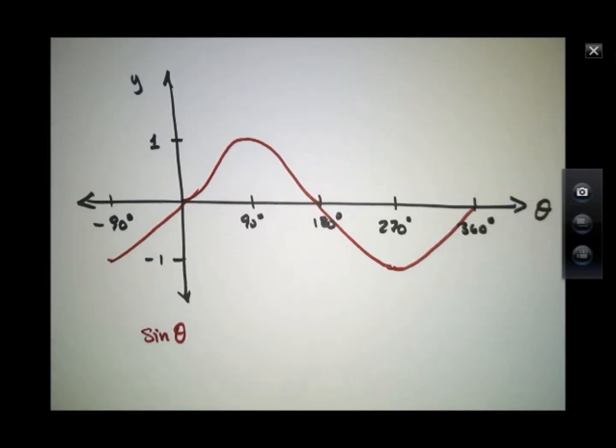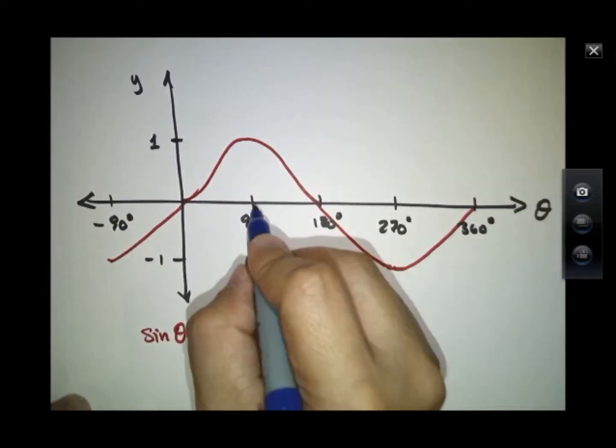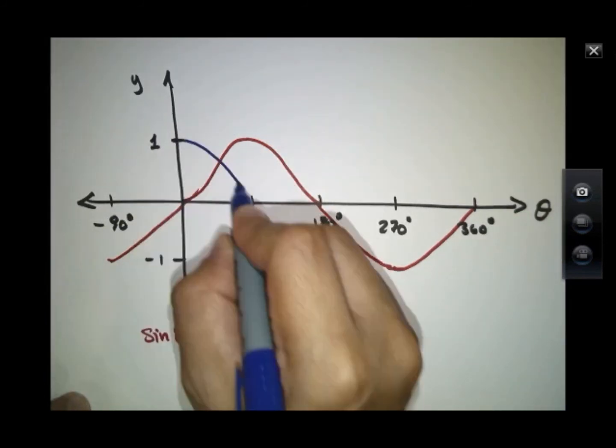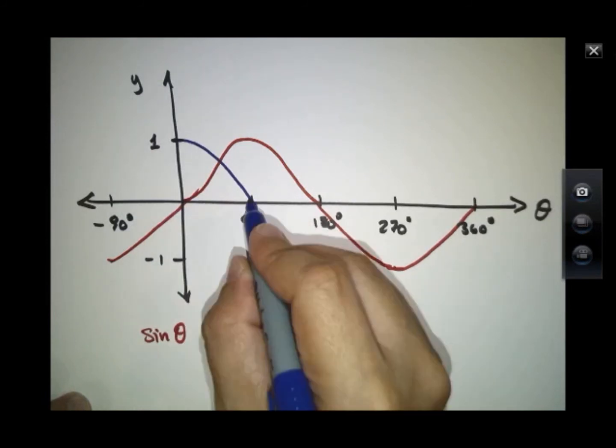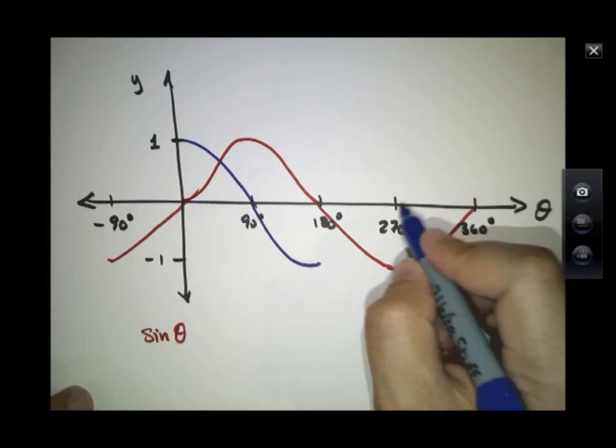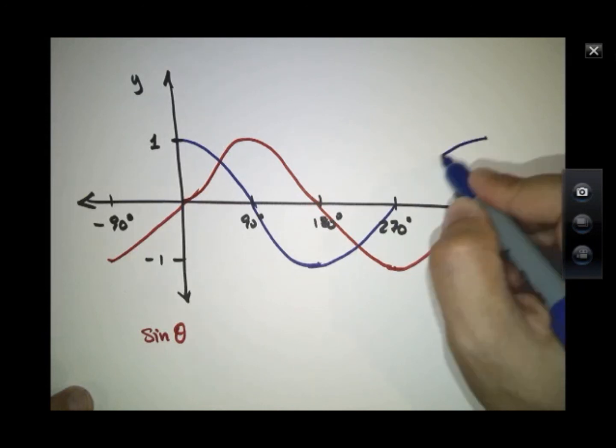Cosine theta starts out at one. At 90 it goes to zero. At 180, it equals minus one. At 270 it's back to zero. And at 360 it's back up to plus one.